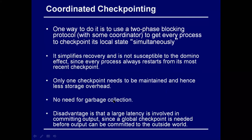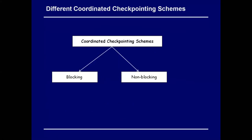The simplest coordinated checkpointing protocol is similar to the two-phase commit protocol. There are two types: blocking and non-blocking. Blocking means that at the time of global checkpoint formation, all processes are blocked — no application messages are passed. This prevents orphan messages. The coordinator initiates the process, and it works like two-phase commit where the coordinator asks all others to vote, then makes a final decision.